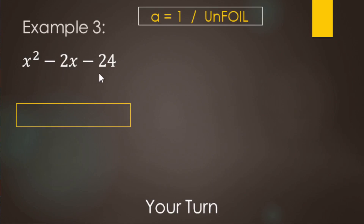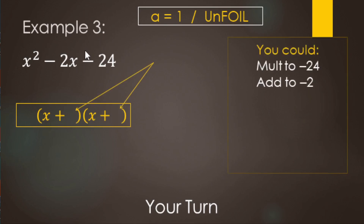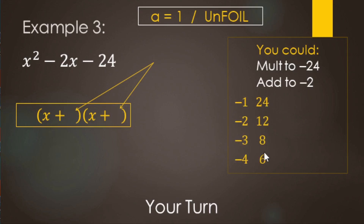Now factor x squared minus 2x minus 24. Notice we have a equals 1 — no number in front of x squared. Our answer will look like x plus a number and x plus another number. The two numbers multiply to negative 24 and add to negative 2. You could list all pairs: negative 1 times 24, negative 2 times 12, negative 3 times 8, negative 4 times 6, and then with the negative on the other number as well. Looking for the pair that adds to negative 2 — that's 4 and negative 6, since 4 plus negative 6 equals negative 2.